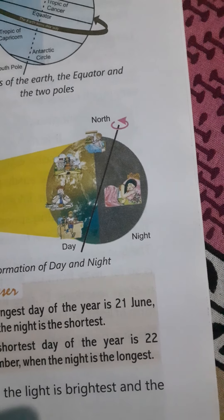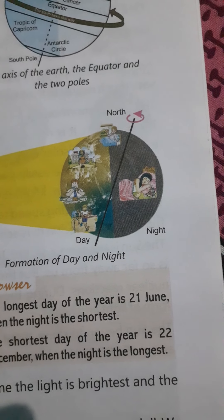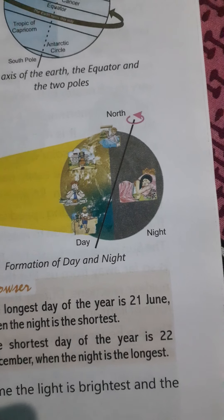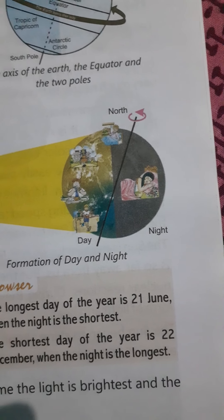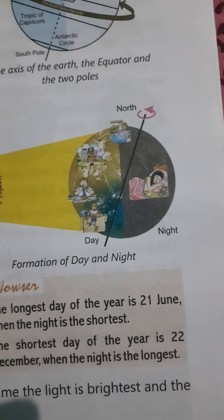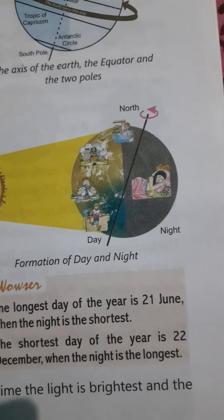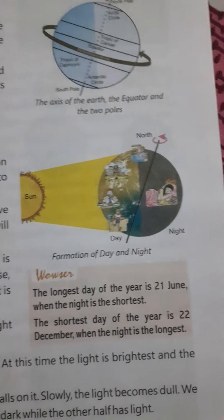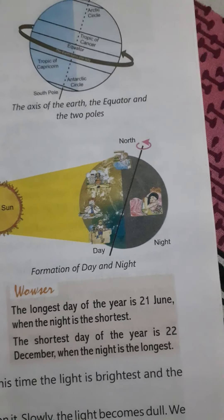If someone asks you how day and night form, we will say that day and night are caused just because of the rotation of Earth on its tilted axis, and the tilted angle is 23.5 degrees. We will meet in the next live class — thank you.